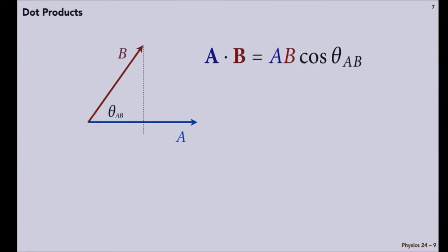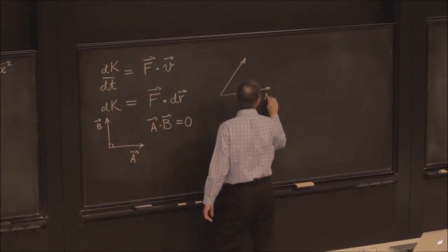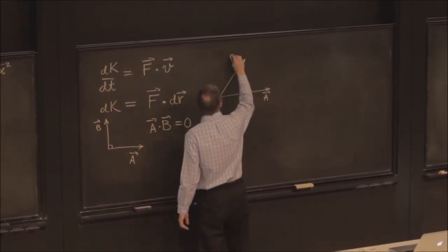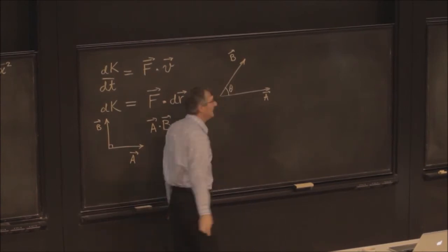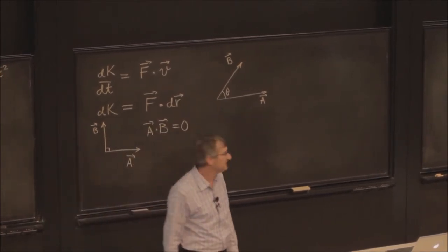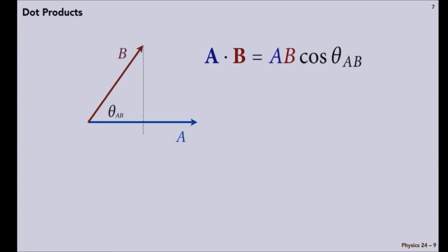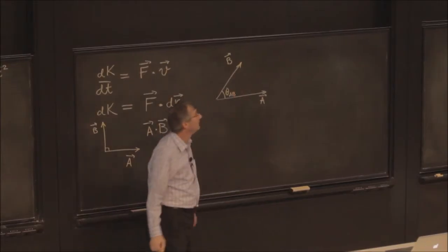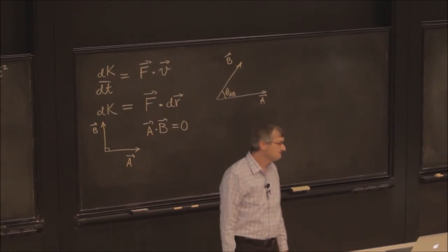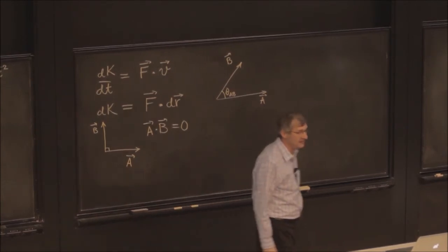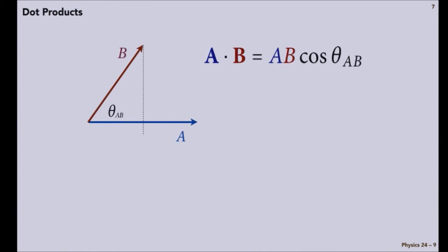So I'm going to line up my vector a along the x-axis, just for grins. And b will be at some angle with respect to, let's see, I called it a b. And a dot b, allegedly, is the product of the magnitudes of a and b times the cosine of the angle between.